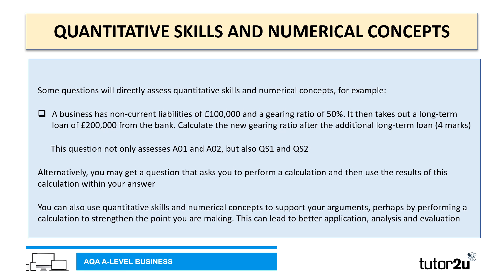Some questions will directly assess quantitative skills and numerical concepts. For example, we can see a typical AQA A-level business question on screen: 'A business has non-current liabilities of £100,000 and a gearing ratio of 50%. It then takes out a long-term loan of £200,000 from the bank. Calculate the new gearing ratio after the additional long-term loan.' That's four marks and it assesses EO1, EO2, quantitative skill one and quantitative skill two.